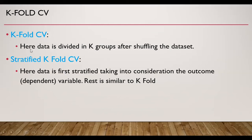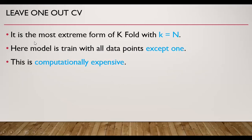Then there is k-fold cross-validation, where data is divided into k groups after shuffling the data set. Its variation is stratified k-fold cross-validation, where data is first stratified taking into consideration the outcome or dependent variable. This is important when we have an imbalanced data set; the rest is similar to k-fold. Leave-one-out cross-validation is the most extreme form of k-fold where k equals n, the number of data points. The model is trained with all data points except one, and this is computationally expensive because we need to run it n times.